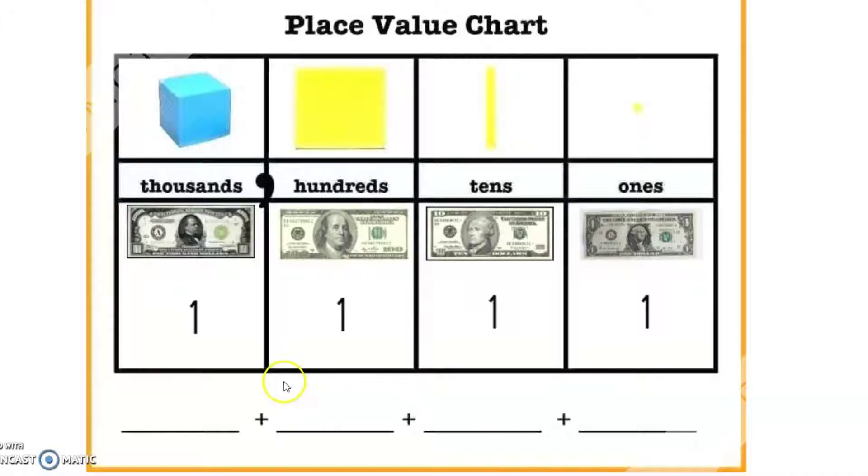We're going to spend some time thinking about place value and the value of each digit. In this chart, I put a one in every place value. However, the one in the thousands place is worth a whole lot more than the one in the ones place. I have a one over here that is the same